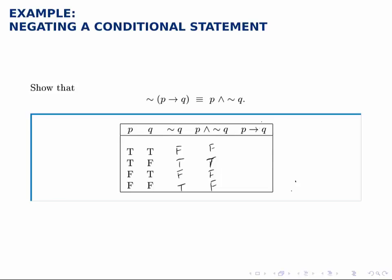Then we'll build a column for P implies Q, which again is only false when P is true and Q is false. So it's only going to be false in the second row.